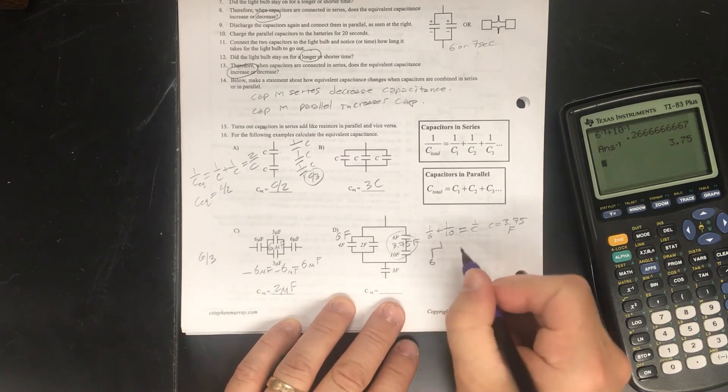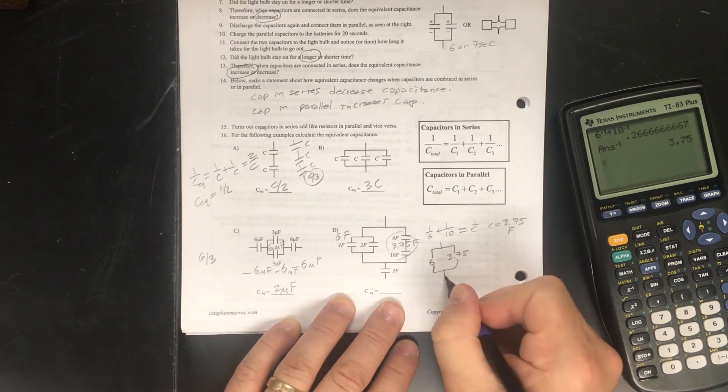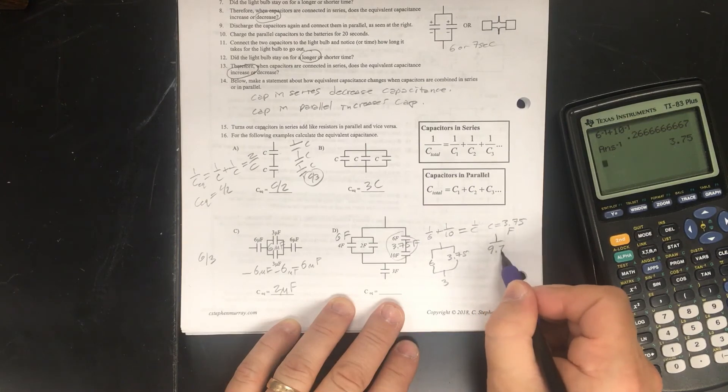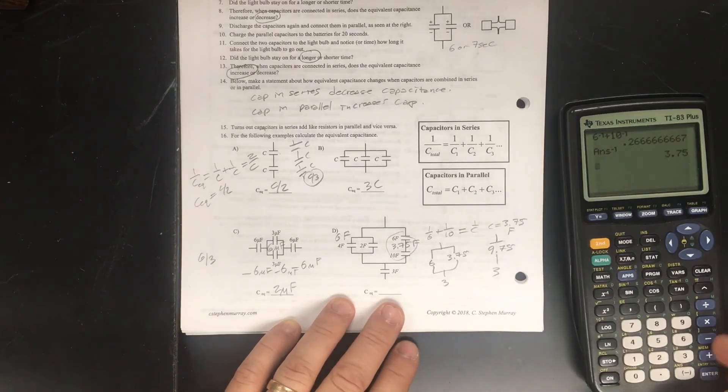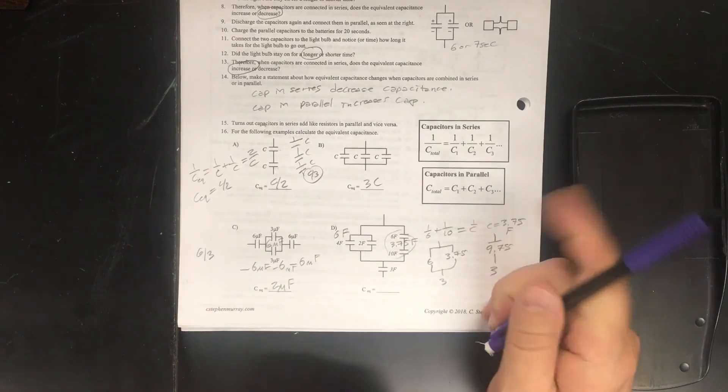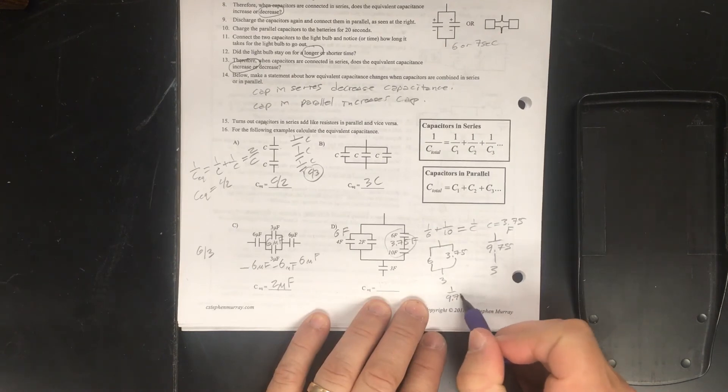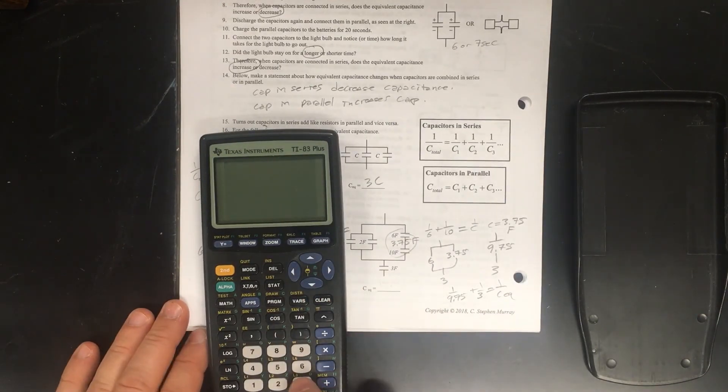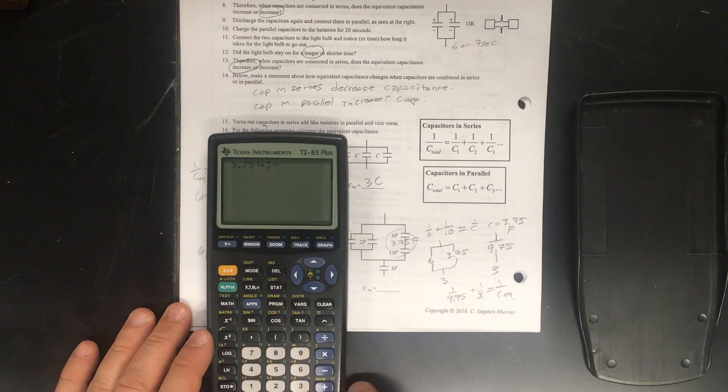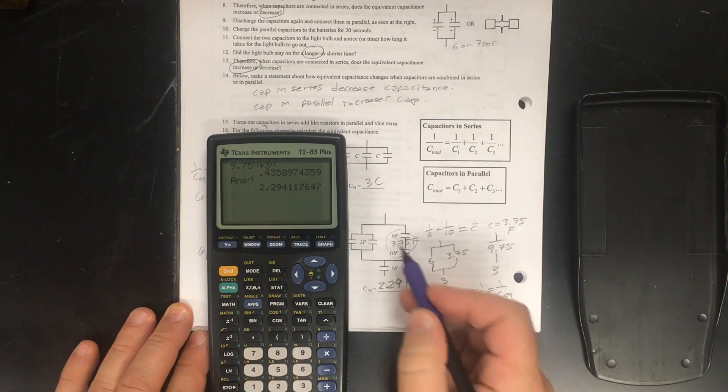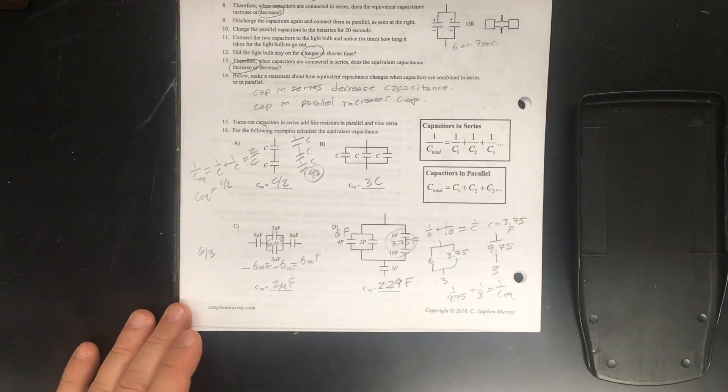So this whole thing here is 3.75 farads. Let's redraw. So here we have a 6, here we have 3.75, and those will combine with a 3. These two are in parallel, so that's just, sorry, that's 9.75, and then we have a 3. So that gives us... And here at the end, we have them in series. And so what we have to do, yeah, I messed up there. I'm pretty tired this morning. So this will be 1 over 9.75 plus 1 over 3 equals 1 over C equivalent. Once again, let's use our x to the minus 1 function. 9.75 plus 3 x to the minus 1. That equals 1 over C. 2.29 farads for this entire thing.